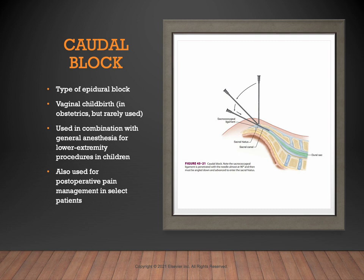Caudal anesthesia is a type of epidural block injected into the epidural space via the sacral canal. It's sometimes used in combination with a general anesthetic for lower extremity procedures in children, or to manage post-op pain in some patients. Caudal blocks for vaginal childbirth are relatively rare today, as the preferred method is the lumbar epidural.